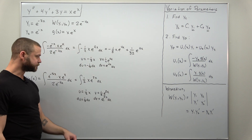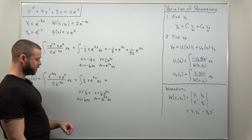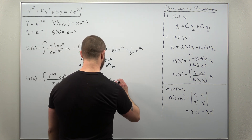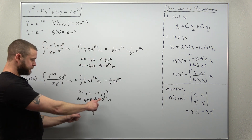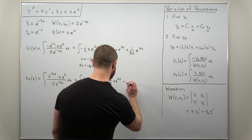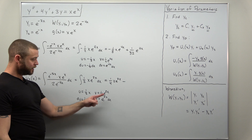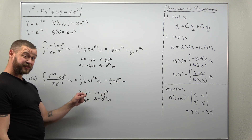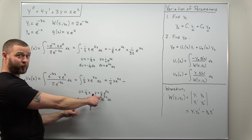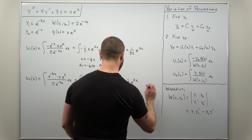The integration by parts for u2 is similar but with different factors since we have e to the 2x instead of e to the 4x. Let u = 1/2 x, dv = e to the 2x. Then du = 1/2 dx and v = 1/2 e to the 2x. Applying the formula: uv gives 1/4 x e to the 2x. For minus the integral of v du, there are no extra negatives, so we get minus 1/4 times 1/2 times 1/2 e to the 2x, which is minus 1/8 e to the 2x.